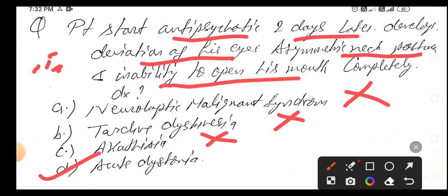If they ask an MCQ in such a way, how to treat this acute dystonia? The drug of choice is diphenhydramine or benztropine. For akathisia treatment: propranolol, lorazepam, diphenhydramine, or benztropine. In tardive dyskinesia we treat with valbenazine or tetrabenazine. In neuroleptic malignant syndrome, dantrolene is the drug of choice.